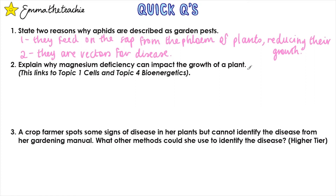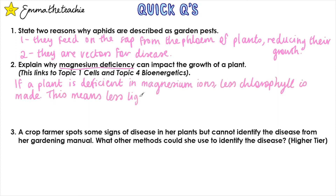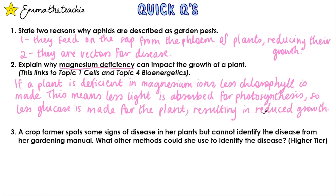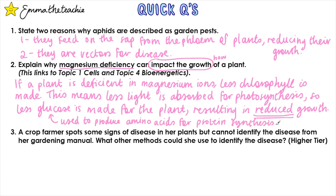Question 2: Explain why magnesium ion deficiency can affect the growth of a plant. This links to topic 1 cells and topic 4 bioenergetics. If a plant is deficient in magnesium ions, less chlorophyll is made. This means that less light is absorbed for photosynthesis, so less glucose is made for the plant, which results in reduced growth. You could go one step further and say that glucose is used to produce amino acids for protein synthesis, and less protein would result in less growth. As this was an explain question, use language that shows you are explaining your answer.